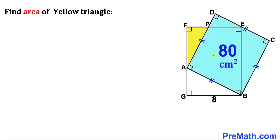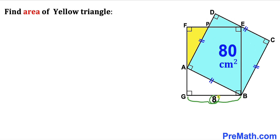Welcome to PreMath. In this video we have a blue square ABCD and a rectangle EFGB put together, as shown in the diagram, such that we get a yellow triangle AFP. The area of the blue square is 80 square centimeters and the side length BG is 8 centimeters. Our task is to calculate the area of the yellow triangle AFP.